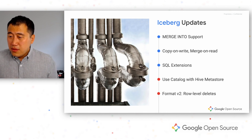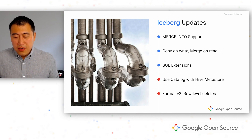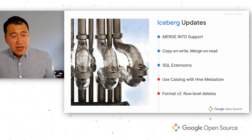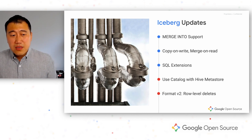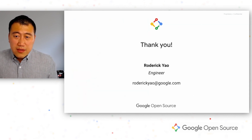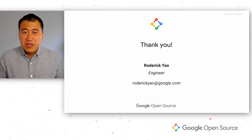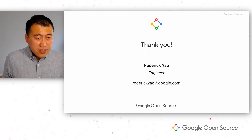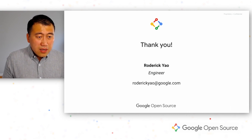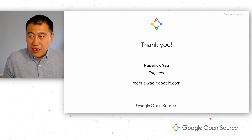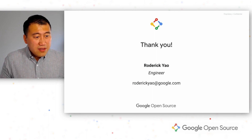The next feature is still in progress — it's version 2 of the Iceberg format, which intends to support row-level deletions. With that, this concludes my talk today. Thank you so much for listening. My name is Ravi Yao — feel free to reach out. Have a nice day.